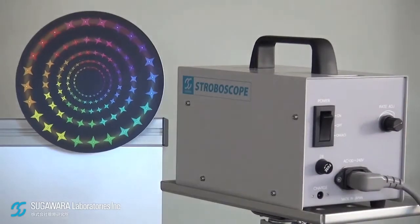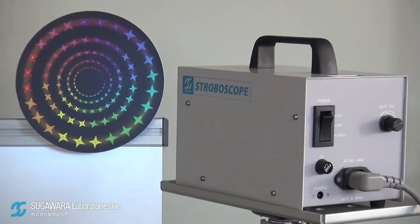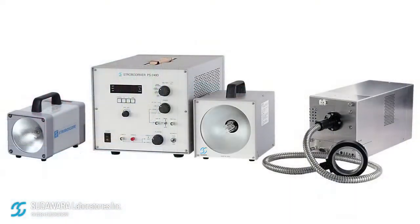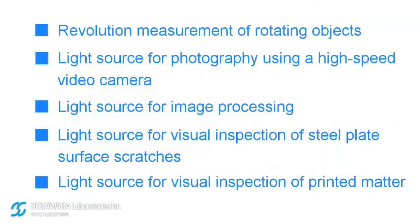The light emitted by a stroboscope shines on a rotating object. A stroboscope is a piece of equipment that emits a sharp flashing light at a regular interval. Stroboscopes utilize this afterimage effect and are used as light sources for measuring the revolutions of rotating objects and for the state observation of various objects.